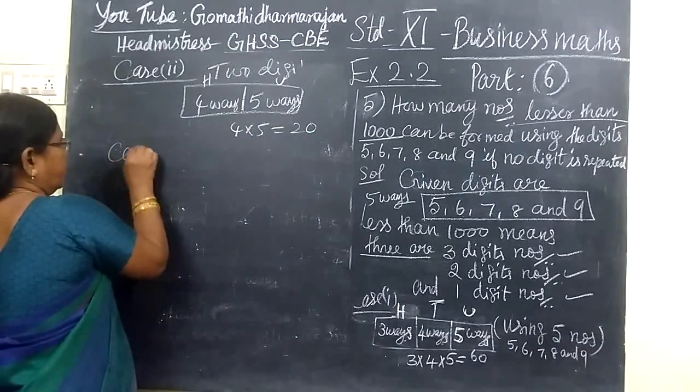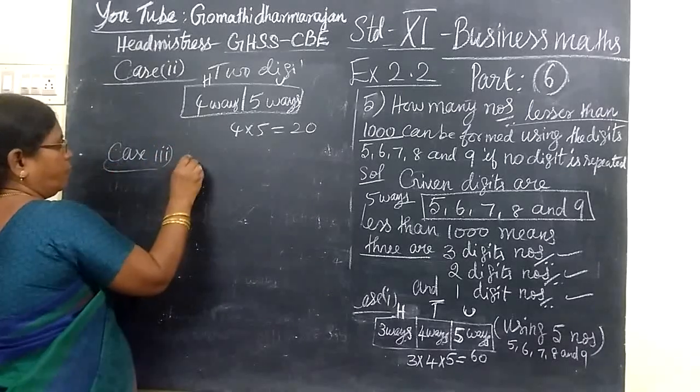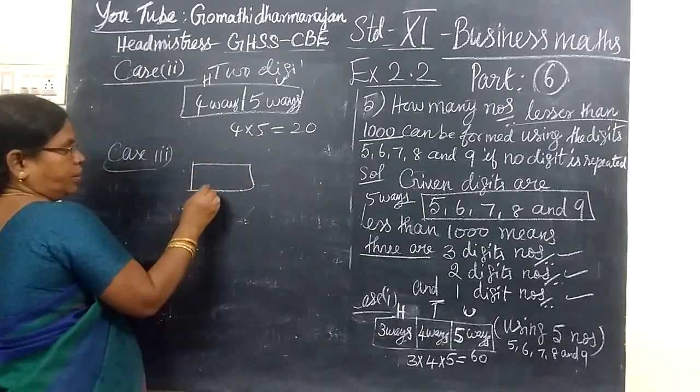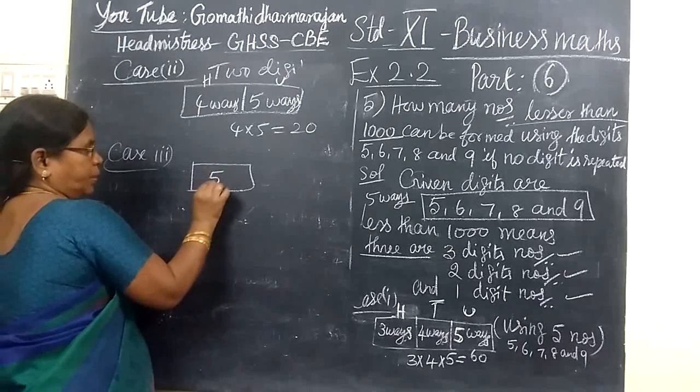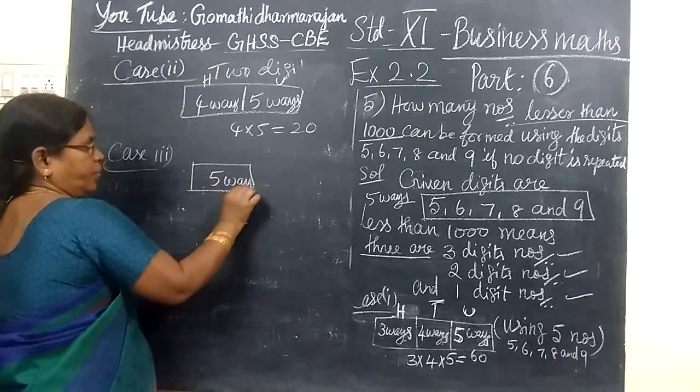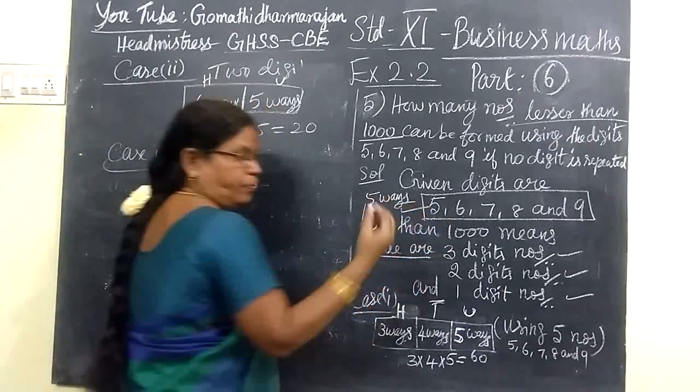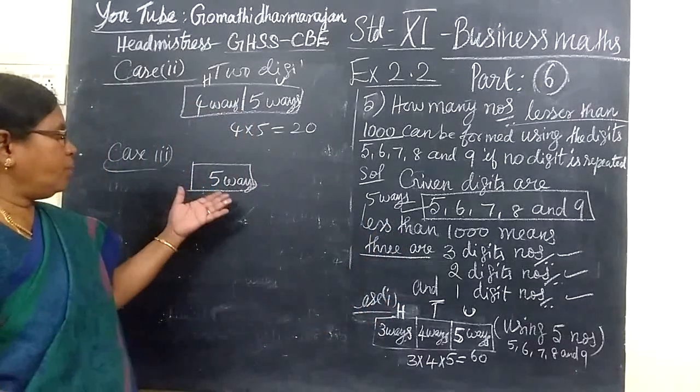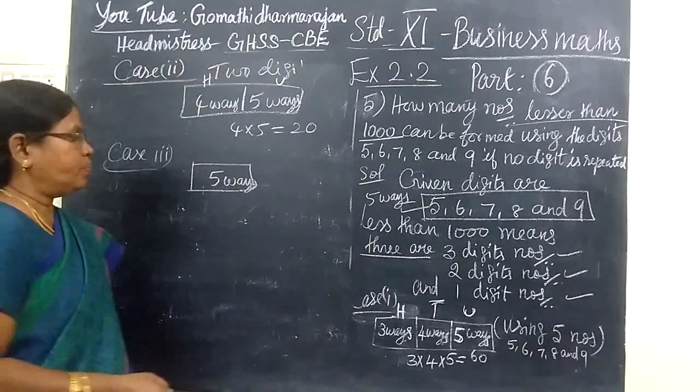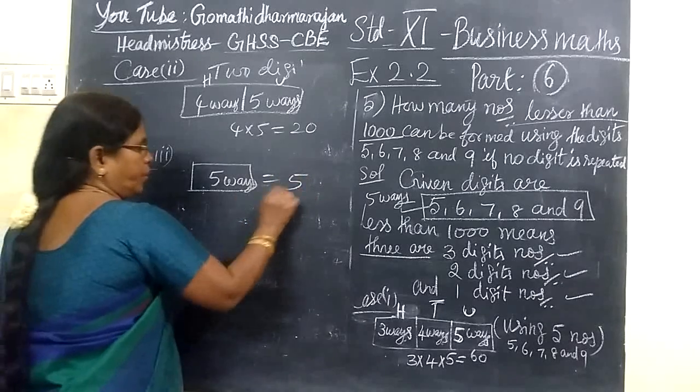Then case 3: 1-digit number. We are forming only 1-digit number. So 1-digit number, unit place, we have total of 5 ways. Because we are having 5 numbers, so total number of ways is 5 ways. So this one is 5.